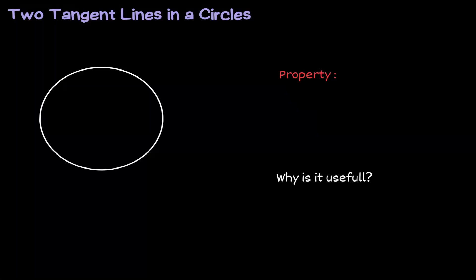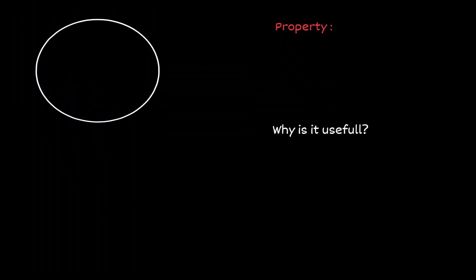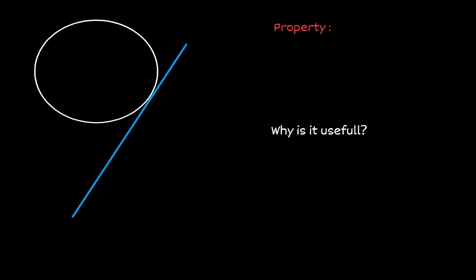Welcome, let's discuss the idea of having two tangent lines in one circle. Let's start by drawing one tangent line in the circle and let's consider this point of tangency right here. Let's call it R.